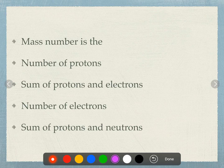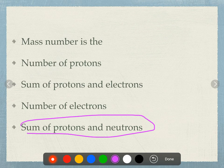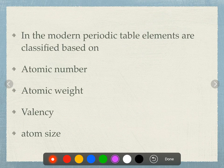Mass number is: number of protons, number of protons and electrons, number of electrons, or sum of protons and neutrons? Mass number is the sum of protons and neutrons.